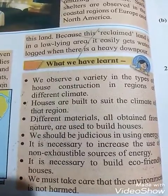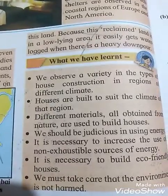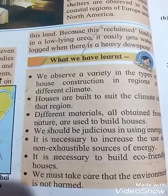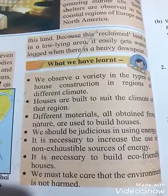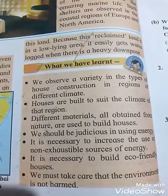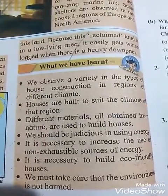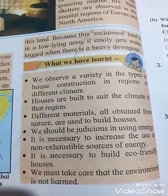What we have learned in Chapter 11: First, we observe a variety in types of house construction in regions of different climate. Second, houses are built to suit the climate of that region. Third, different materials obtained from nature are used to build houses. Fourth, we should be judicious in using energy. Fifth, it is necessary to increase the use of non-exhaustible sources of energy. Sixth, it is necessary to build eco-friendly houses.